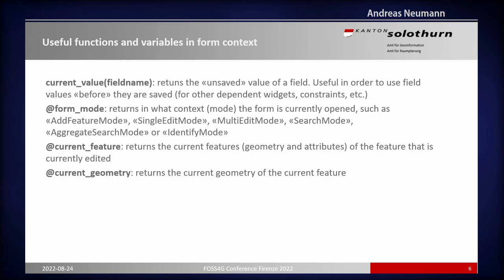There's also a variable called form_mode. There are different form modes in QGIS: the add feature mode — after you create a new geometry or entry, you get a single window just for that feature; single edit mode when you click with the identify tool and get one result; multi-edit mode; search mode; and aggregate identify mode. Two other variables you might know from Atlas: current_feature and current_geometry, which give you all the attribute and geometry data of the object you're editing.